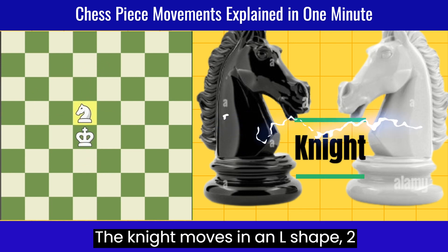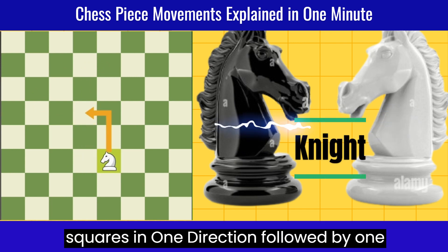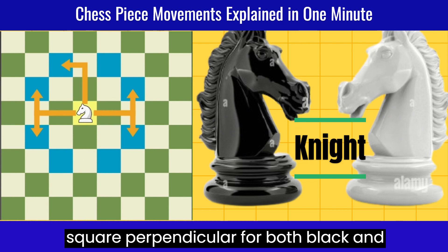The knight moves in an L shape: two squares in one direction followed by one square perpendicular, for both black and white.